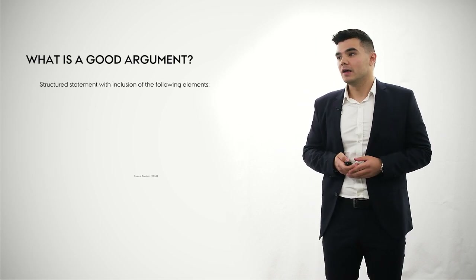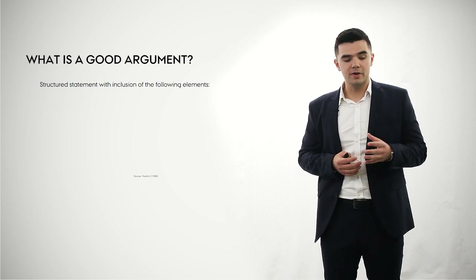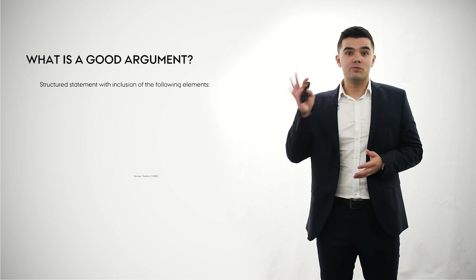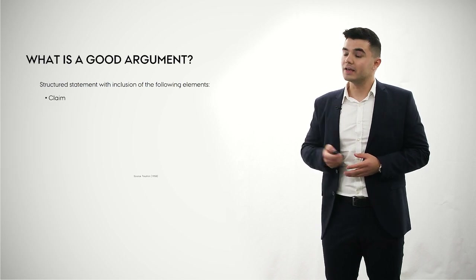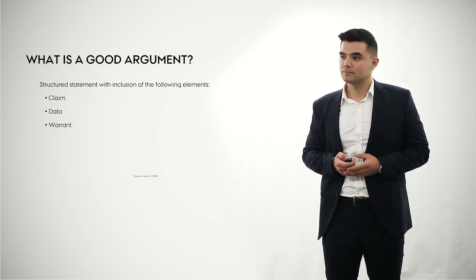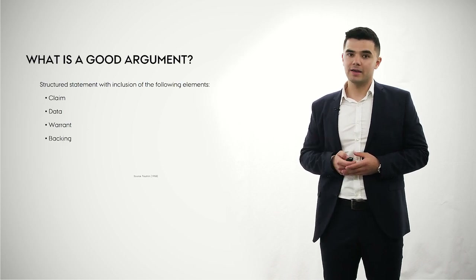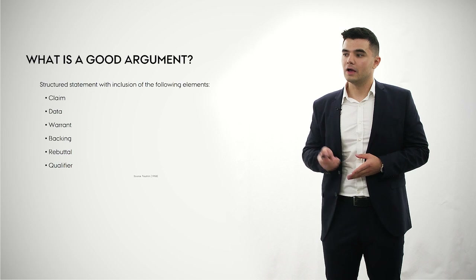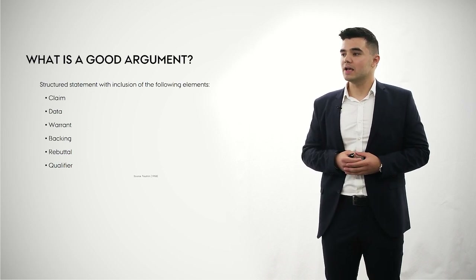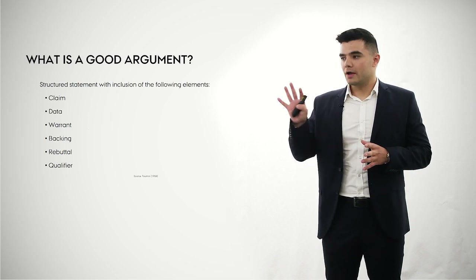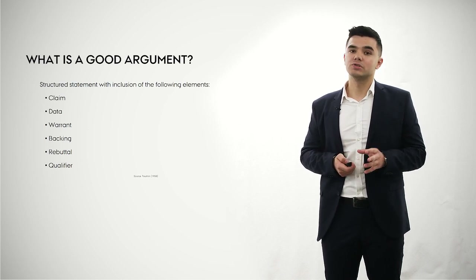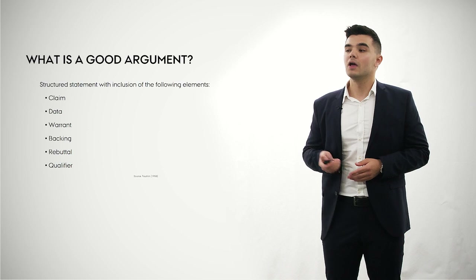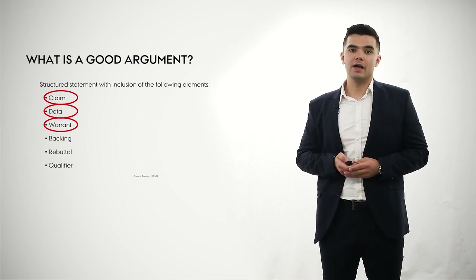But what is a good argument? A good argument is a structured statement — both oral and written — and it should include the following elements: a claim, data, a warrant, backing, rebuttal, and a qualifier. All six elements are parts of Toulmin's argumentation model. In this video, I will focus on the most central elements: the claim, the data, and the warrant.